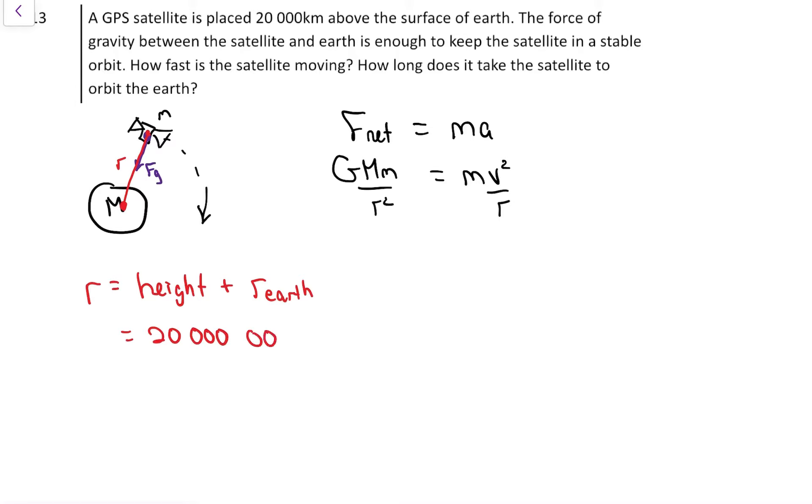We've got to put that in meters, and then add on the radius of the Earth. This is 20 million, and then the radius of the Earth is 6.37 million, so we get 26.37 million meters. That's not the best form, but I'm going to leave it like that.